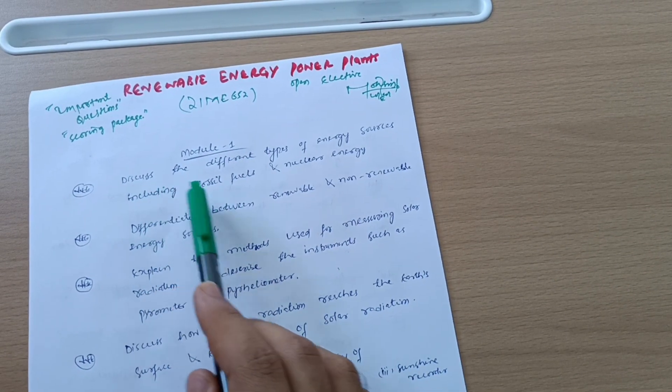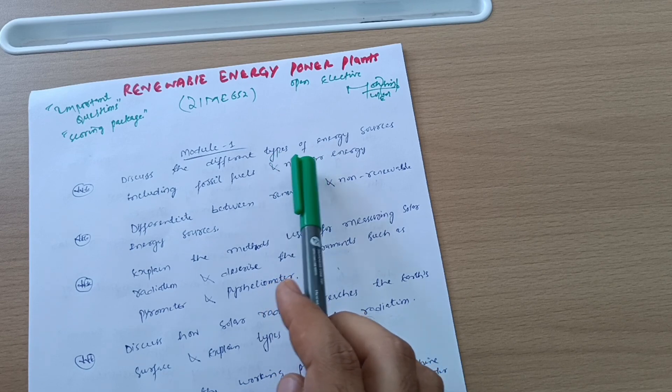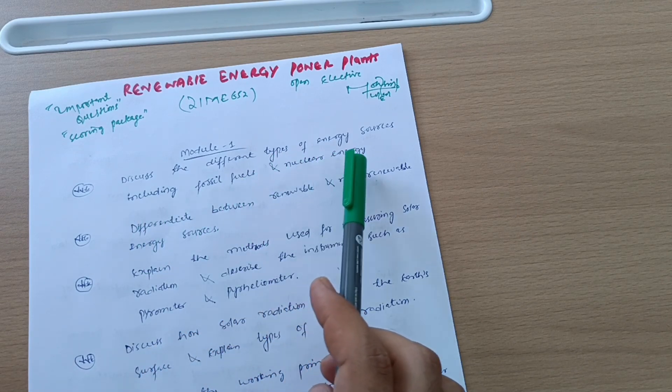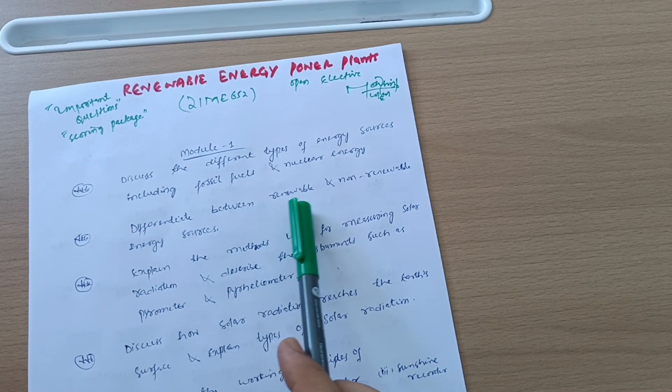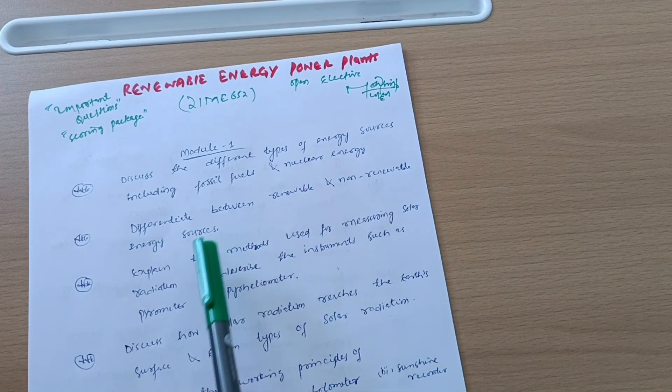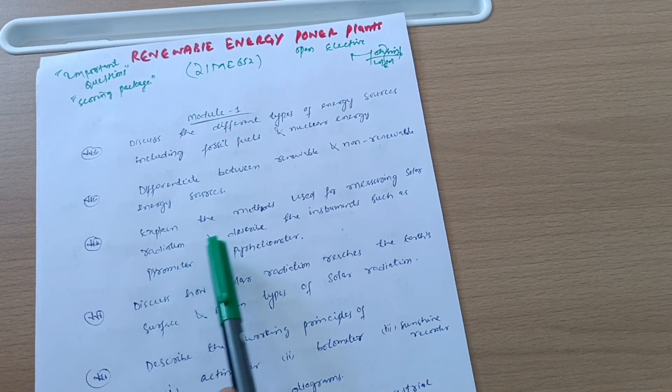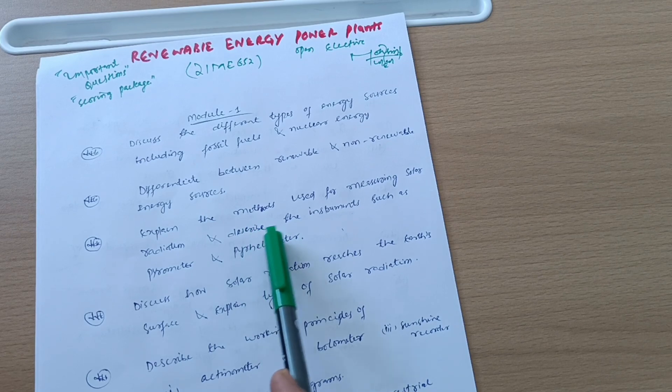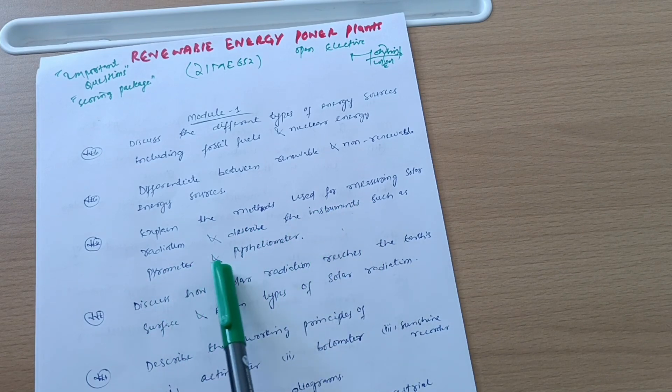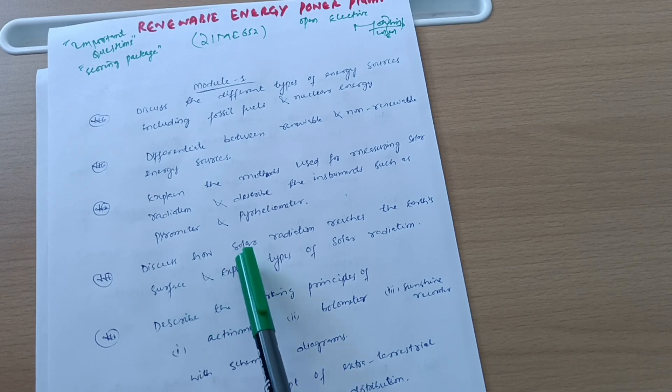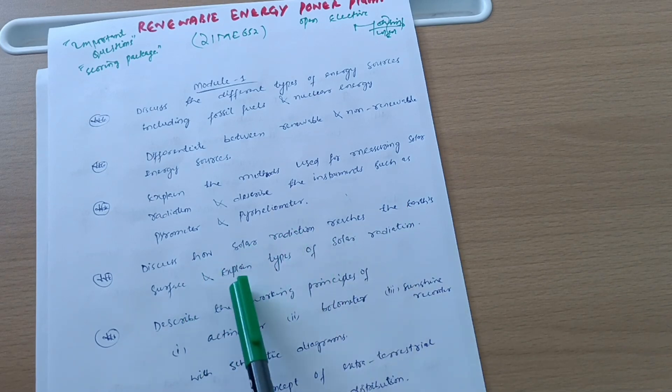Model First, where we have six questions: Discuss the different types of energy sources including fossil fuels and nuclear energy. Differentiate between renewable and non-renewable energy sources. Explain the methods used for measuring solar radiation, and they may ask you to describe the instruments such as pyranometer and pyrheliometer.